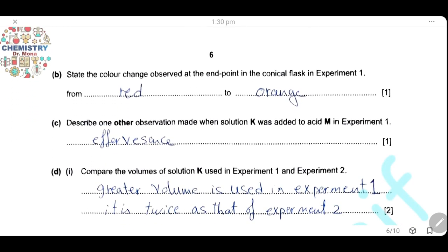Question B. State the color change observed at the endpoint in the conical flask in experiment 1. In the conical flask, we have HCl. So the color of methyl orange in acid media is red, and it will change to orange, which is the color of the indicator in neutral media.